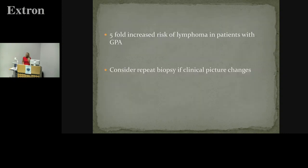One other thing about these patients: they are at a much higher risk of head and neck malignancy. What I didn't realise was they have a five-fold increased risk of lymphoma. We've had patients with long-standing GPA where the picture changed — what was thought to be an orbital pseudotumour rapidly enlarged and turned out to be lymphoma. So even after making the diagnosis, you must retain that index of suspicion and consider repeat biopsy or tests if the picture changes.